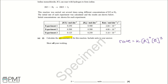If it was zero order, the exponent X or Y would be zero. If it was first order, X or Y would be one. If it was second order, X or Y would be two. Using this, we can work out the rate equation for this reaction and then calculate K.